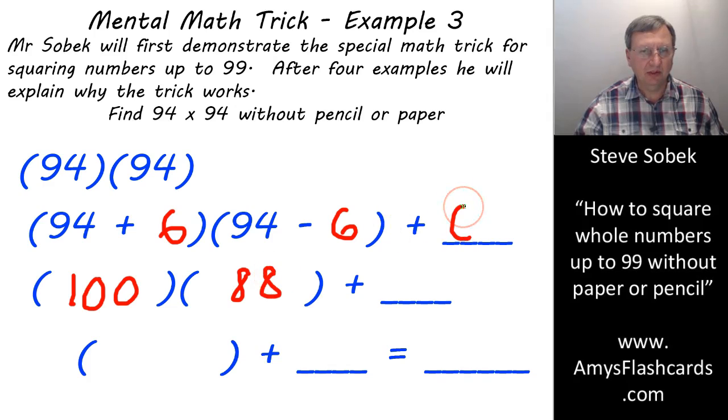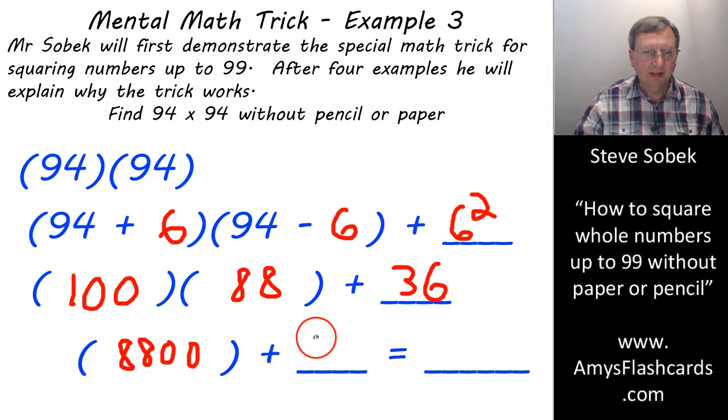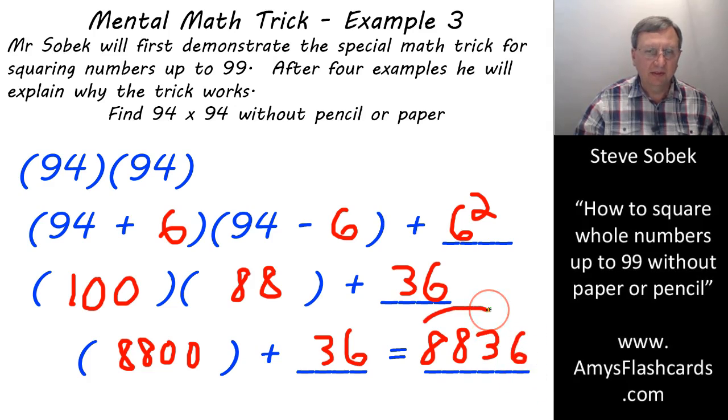That would give us 88 here. And we would have to, of course, add the square of 6 here. Now, it's easy to take 100 times 88. That gives me 8,800. And we're adding 6 squared, which is 36. And 8,800 plus 36 is 8,836. And there's our final answer.